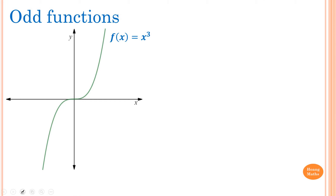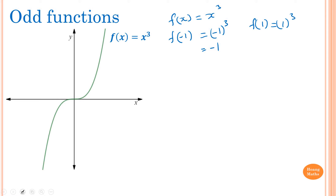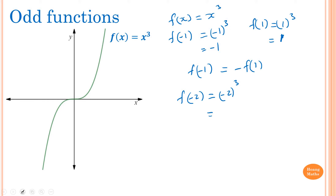A simple odd function is f(x) equals x cubed. So f(-1) is equal to negative 1 all to the power 3, which is negative 1. And f(1) is equal to 1 to the power 3, which is 1. So you can see that f(-1) is equal to negative f(1). So f(-1) is the opposite side. How about f(-2)? f(-2) is negative 2 cubed, which is negative 8.